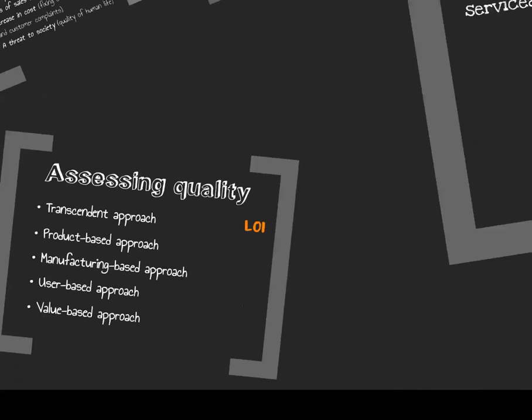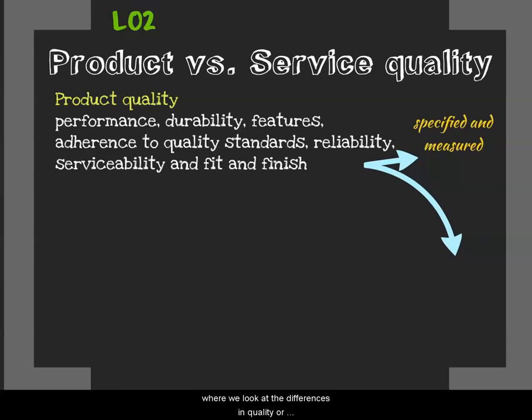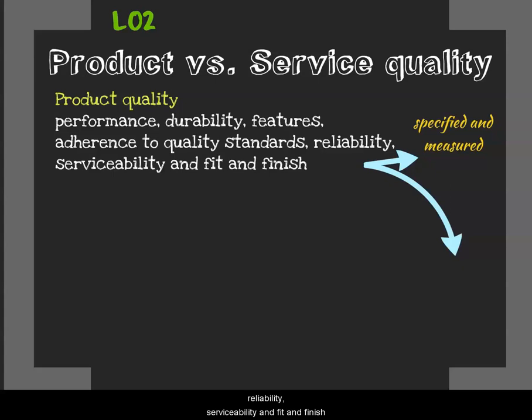Learning Outcome 2 looks at the differences in perceptions between product and service quality. Product quality is a lot easier. From a product marketing perspective, criteria such as performance, durability, conformance with specification, features, reliability, serviceability, and fit and finish can be specified and measured. It's easy to determine whether a product is of good quality because it's durable, has better features, can be serviced, and so forth.